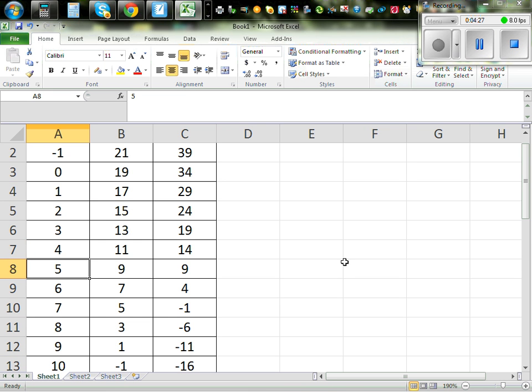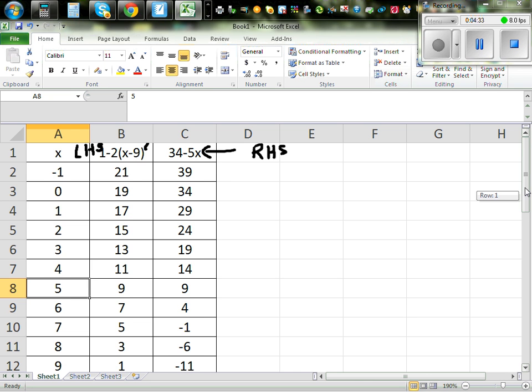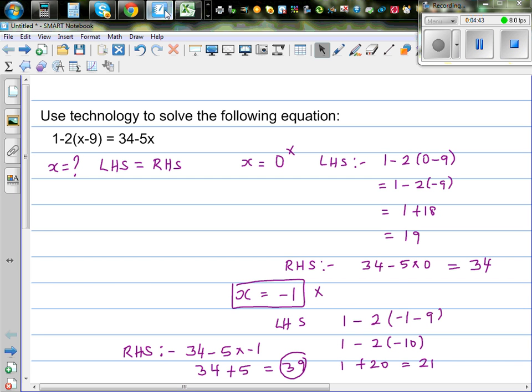Can you see here, when x is 5, your left hand side is equal to right hand side. So when x is 5, your left hand side is 9 and your right hand side is 9. So the solution, the answer for this equation is x equals 9. Just like that. This is how you can solve this equation using Excel.